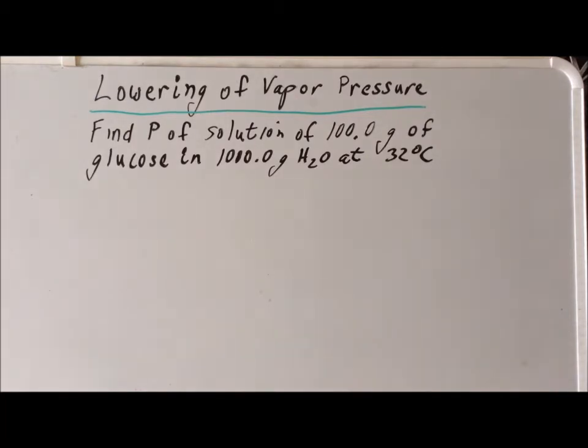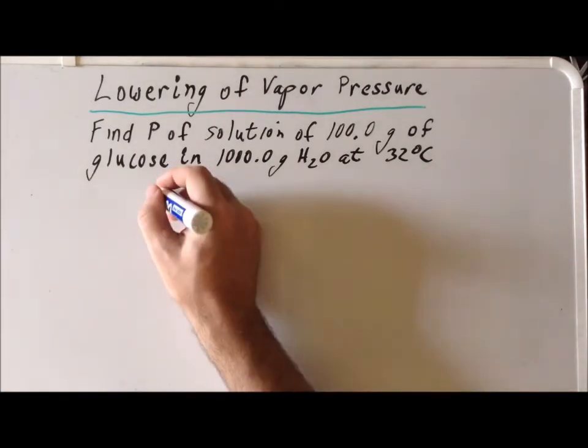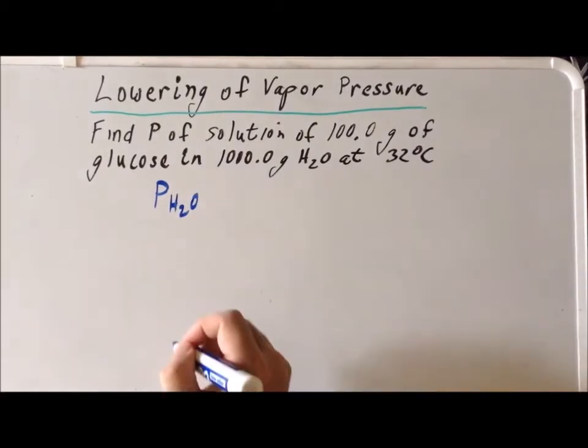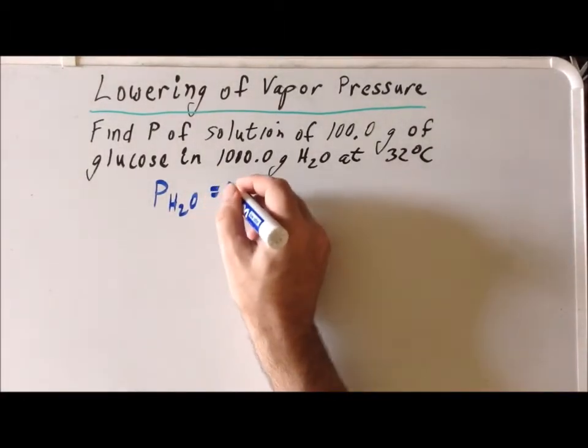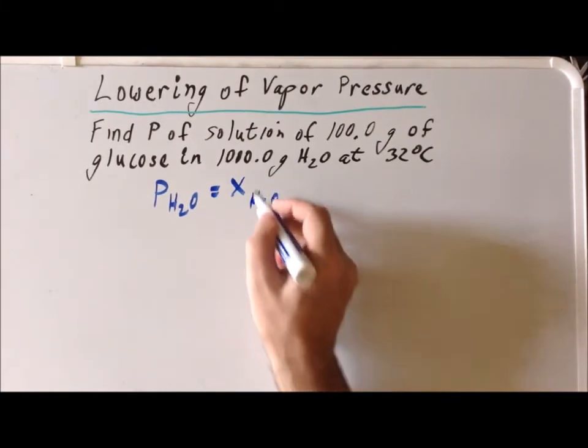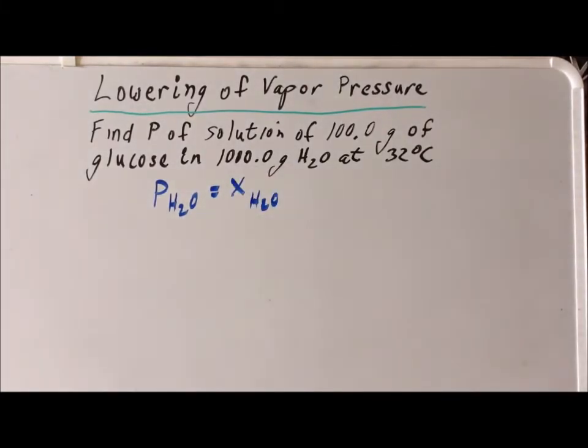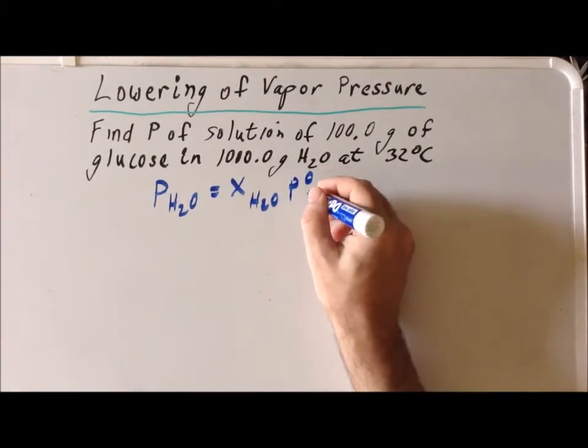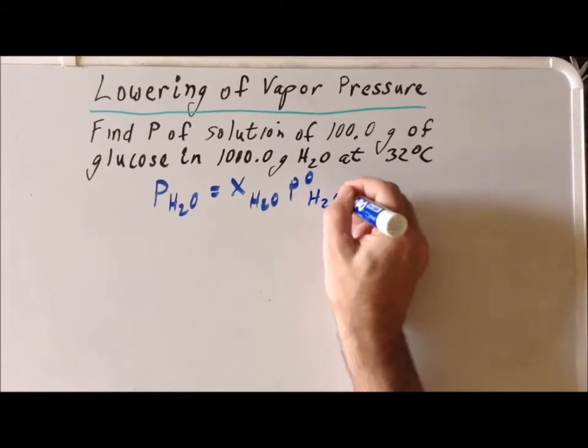The formula that we need to use is as follows: the actual vapor pressure P_H2O is going to be equal to X_H2O, the mole fraction of water, times P°_H2O, which is the vapor pressure of pure water.